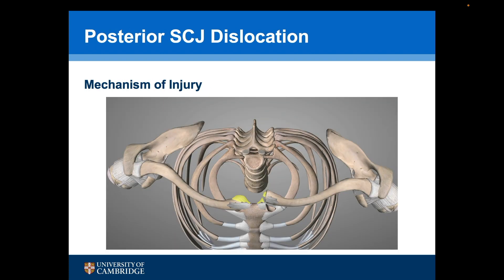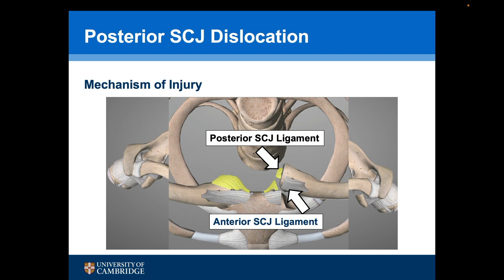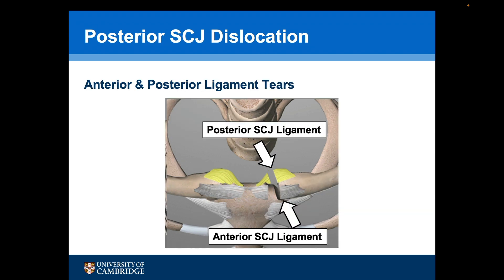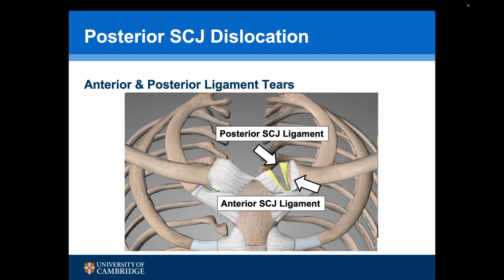Following a posterior dislocation, both the anterior and posterior sternoclavicular joint ligaments are torn. When the joint is reduced, they remain torn. The small ends of the ligaments mean that it is not possible to repair these acutely.